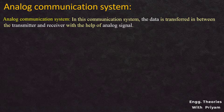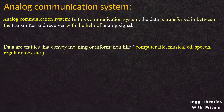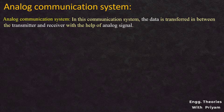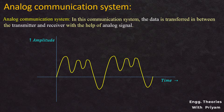Before understanding the analog signal, we need to understand what is analog data. Data are entities that convey meaning or information, like computer file, music on CD, speech, and regular clock. Signals are the electric or electromagnetic encoding of data. When the data is analog, or data is available for every instant of time, we can represent this data by an analog signal like speech or clock. This analog or continuous signal is used for analog communication system.